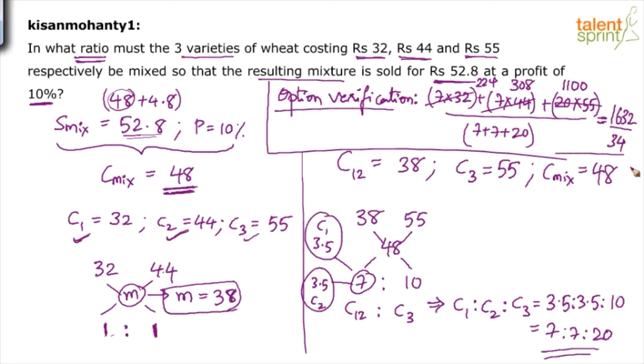How much will that be? Will that be 48? See, 34 into 50 is 1700. 34 into 2 is 68. 1700 minus 68 is 1632. I will split 1632 as 1700 minus 68. 1700 is 50 times, 68 is 2 times. So 50 minus 2 equals 48. Yes, it is 48, which is what is given here. So your answer is 7 is to 7 is to 20. But really a lengthy process because options were not given to us.